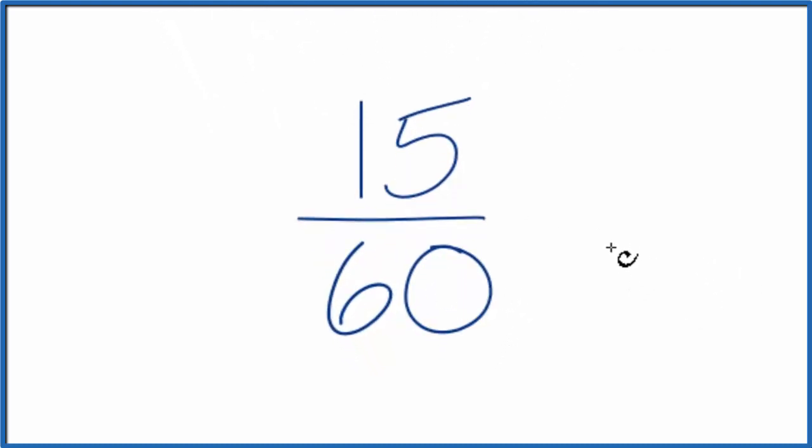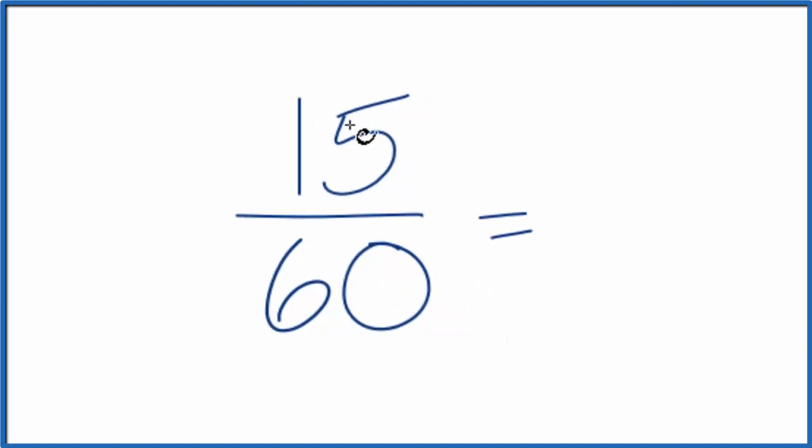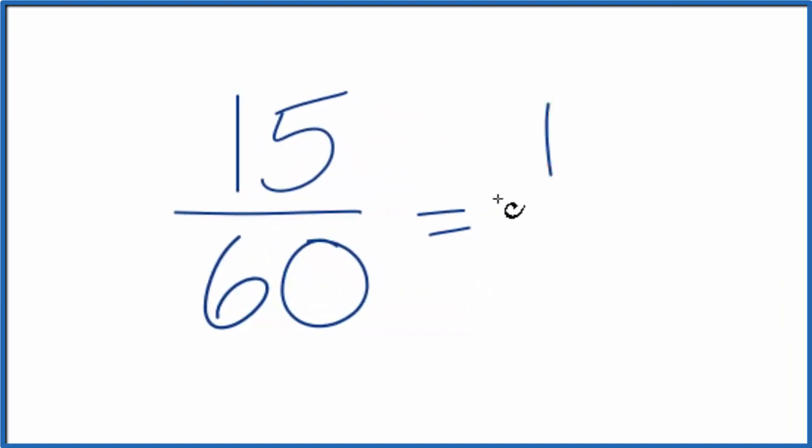We need to find a common factor of both 15 and 60. If you know 15 goes into 60 four times, then you can divide: 15 divided by 15 is 1, and 60 divided by 15 gives us 4. So when we simplify 15 over 60, we get 1/4. That's because our greatest common factor is 15 for this fraction.